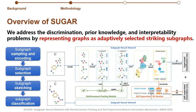In our framework, we address these problems by representing graphs as adaptively selected striking subgraphs. The model includes four main steps. First, subgraph sampling and encoding: for each graph, a fixed number of subgraphs is sampled and encoded by an intra-subgraph attention mechanism. Second, subgraph selection: striking subgraphs are selected by a reinforcement learning module and put into a sketched graph. Third, subgraph sketching: every subnode in the sketched graph is fed into an inter-subgraph attention layer. Subgraph representations are further enhanced by maximizing mutual information between local subgraph and global graph embeddings. Last, the graph classification result is voted by classifying subgraphs.